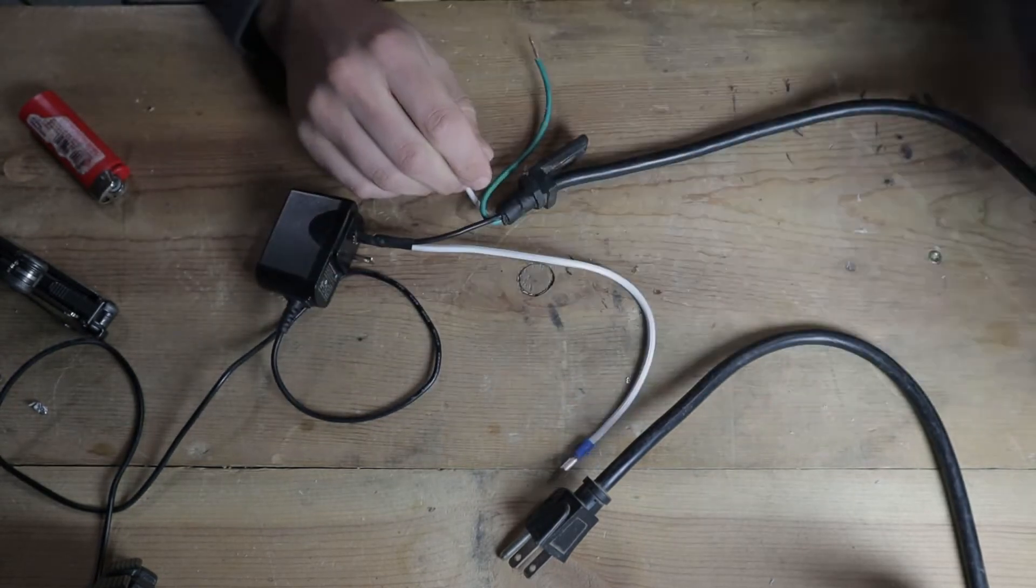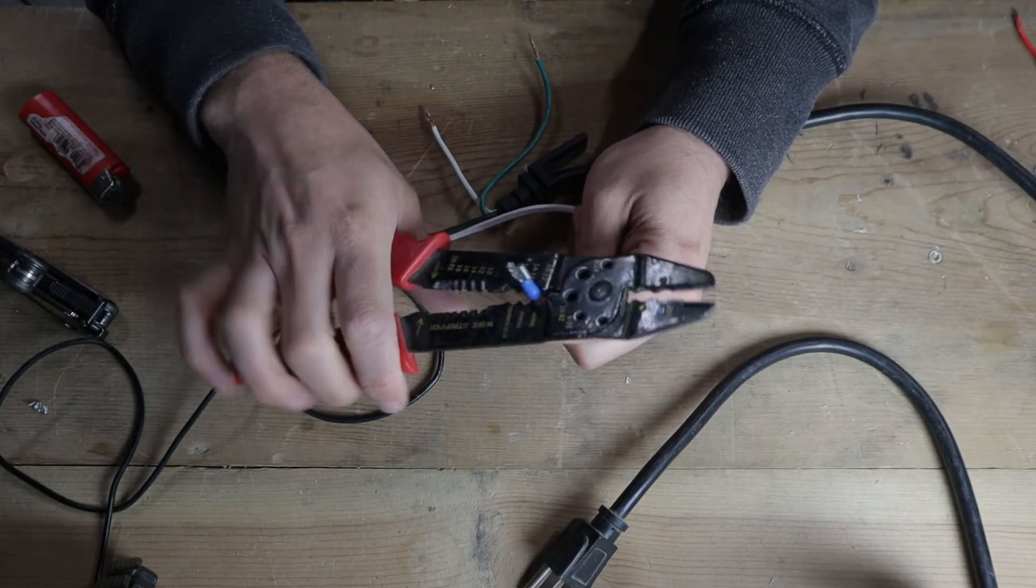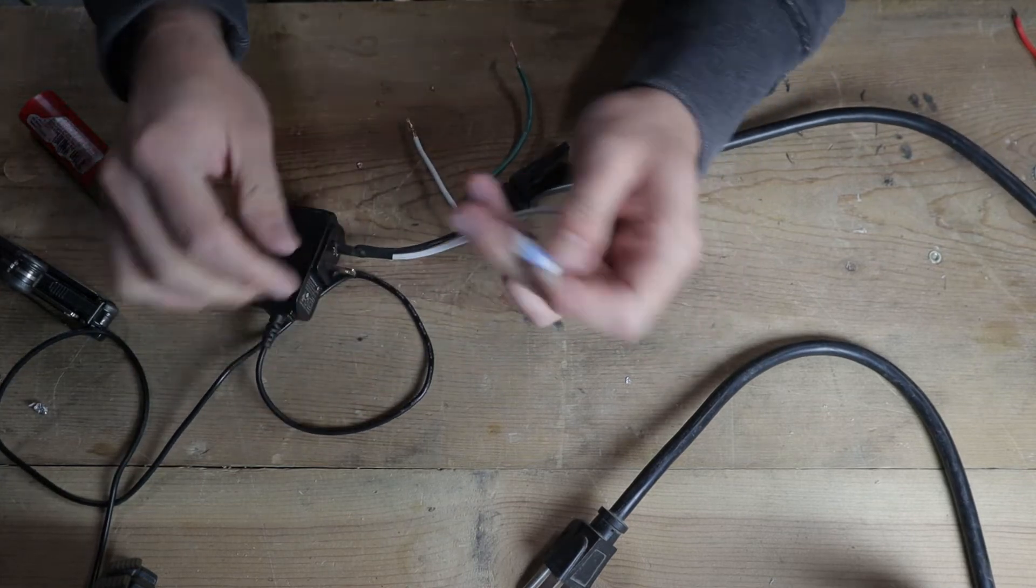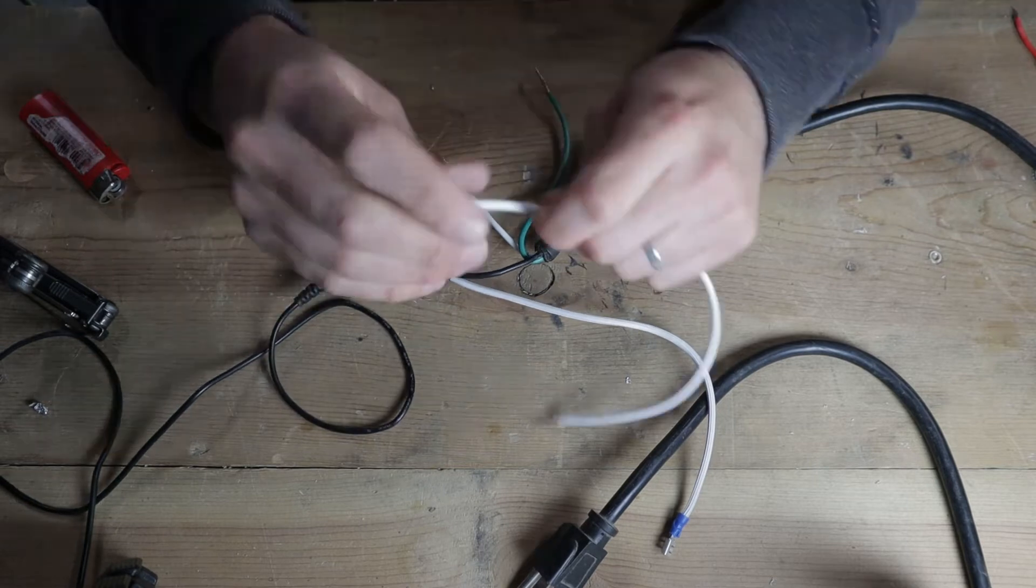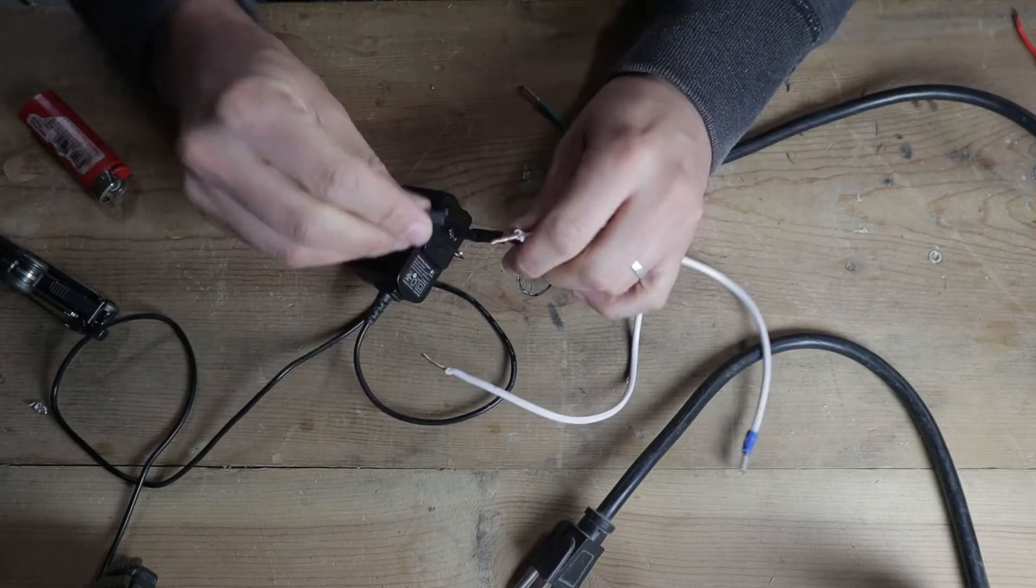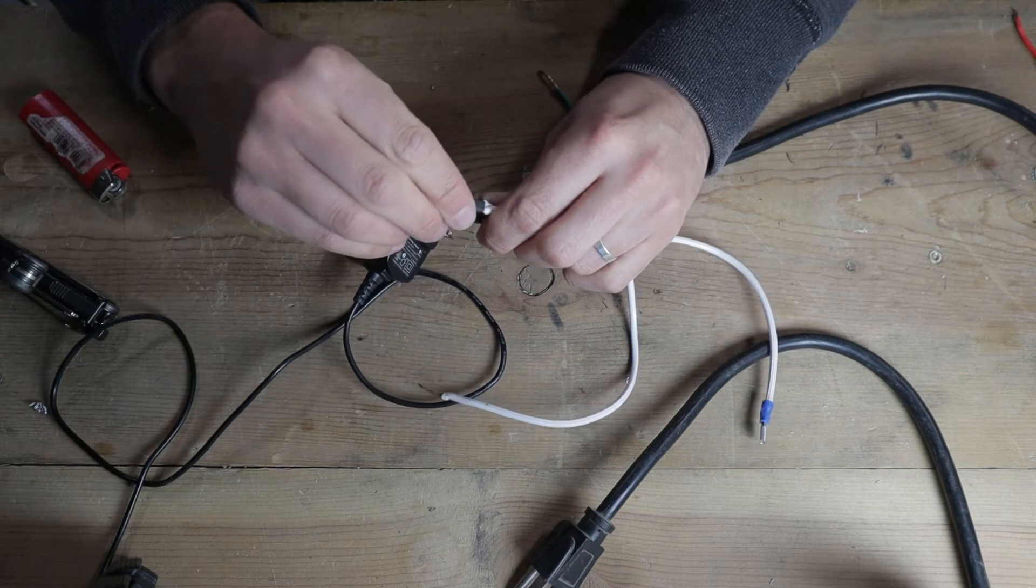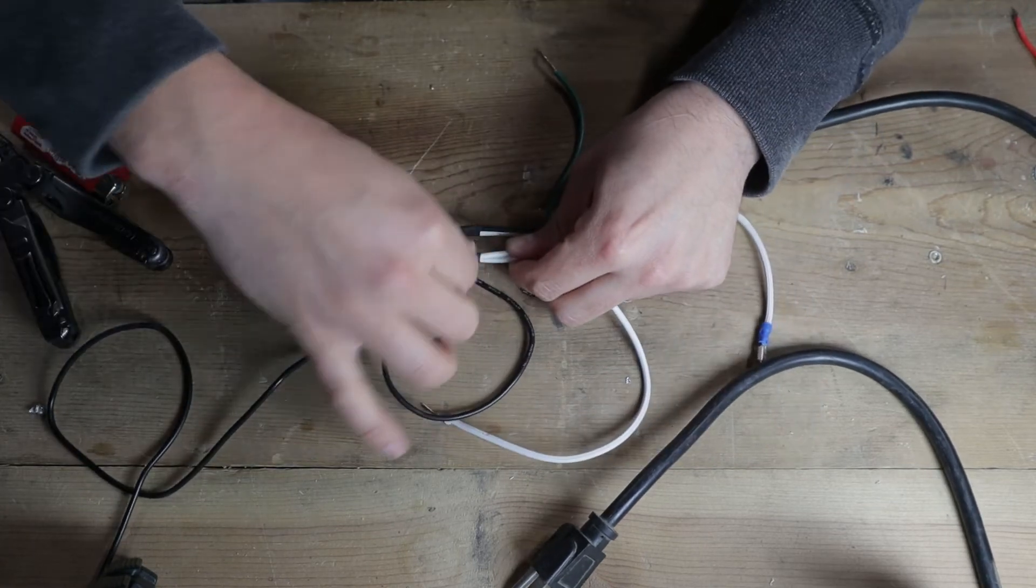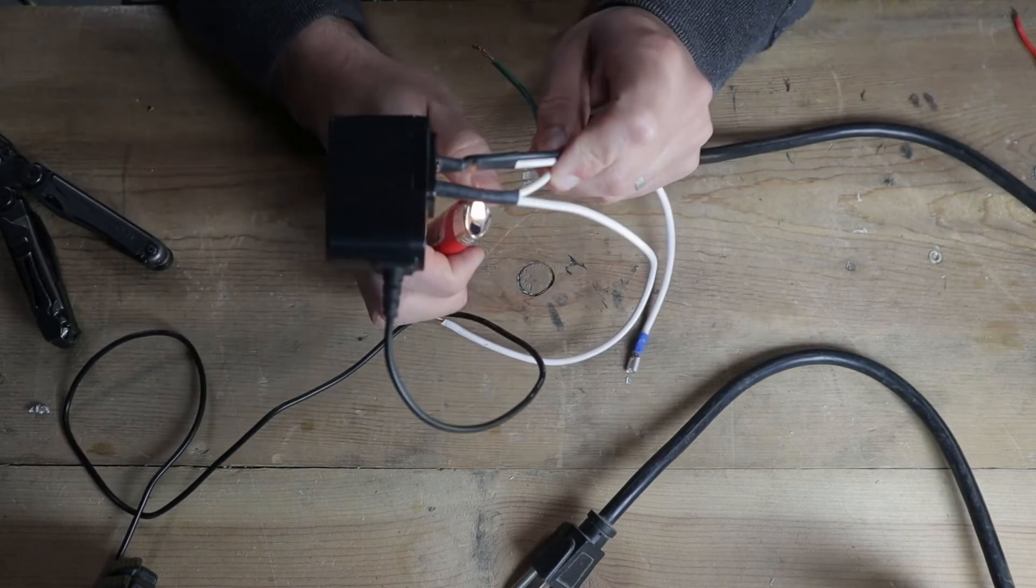And on the other end, we're going to put a spade connector. This will hook up to the spade post on the transformer. Slide that right on. And then just crimp that. That's going nowhere. So I'll do that for this post as well. We have another piece of this wire. Twist those together. Let heat shrink on it.